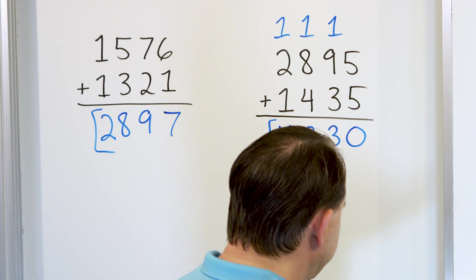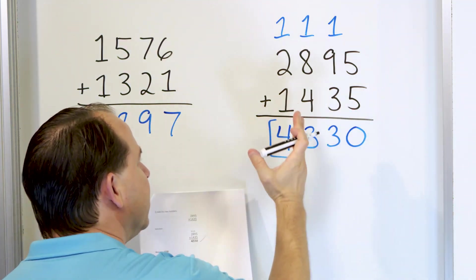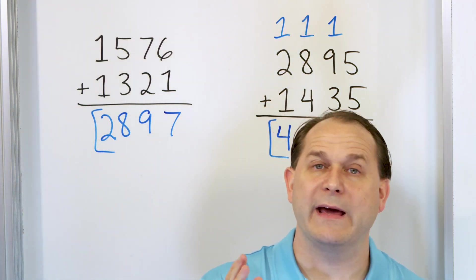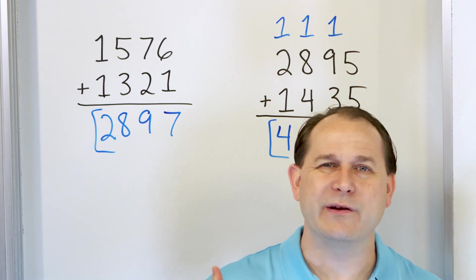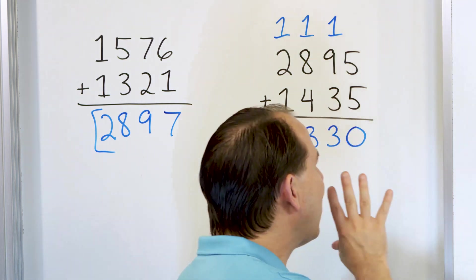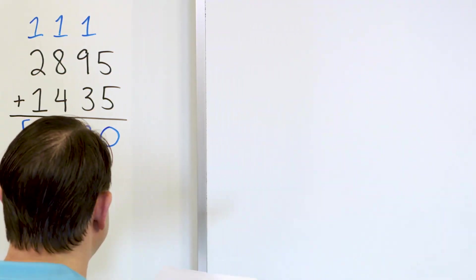So you see four-digit addition is not really any harder. We just have an extra column, so we have more steps. Critically important is I want you to be able to line up your columns and write things neatly. That's actually more important than anything because if you write everything down neatly, then you will have a much higher chance of getting the right answer.